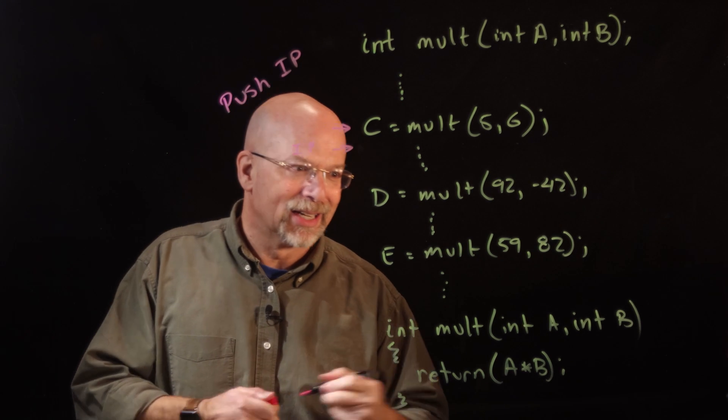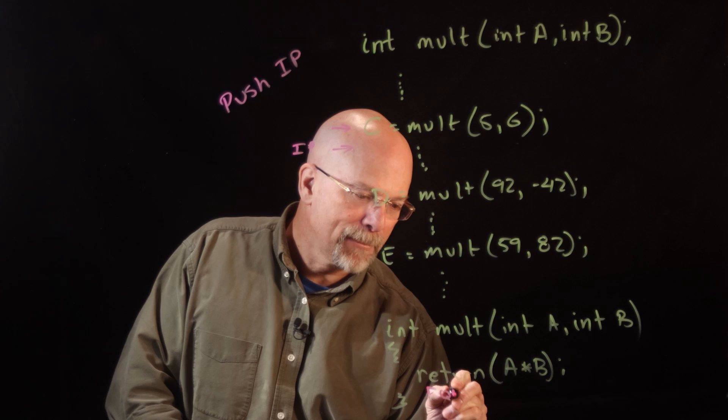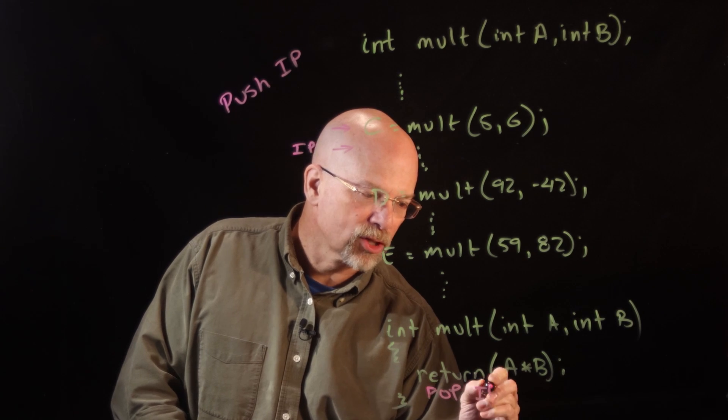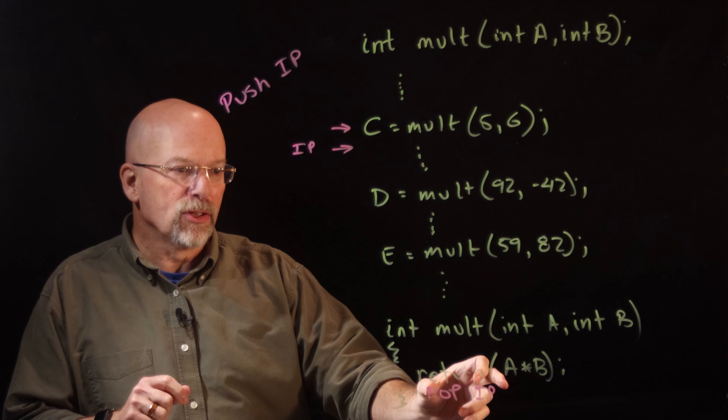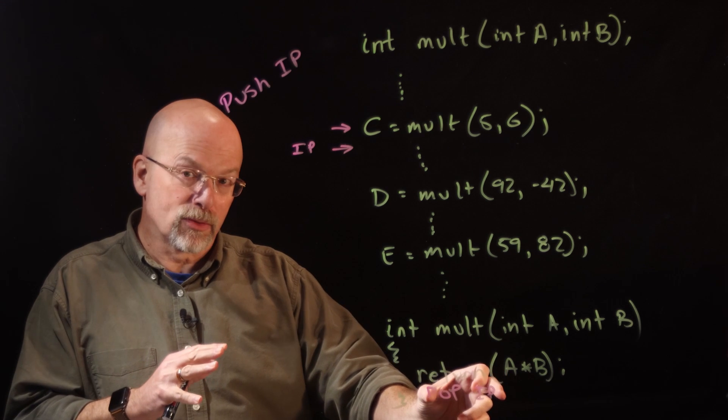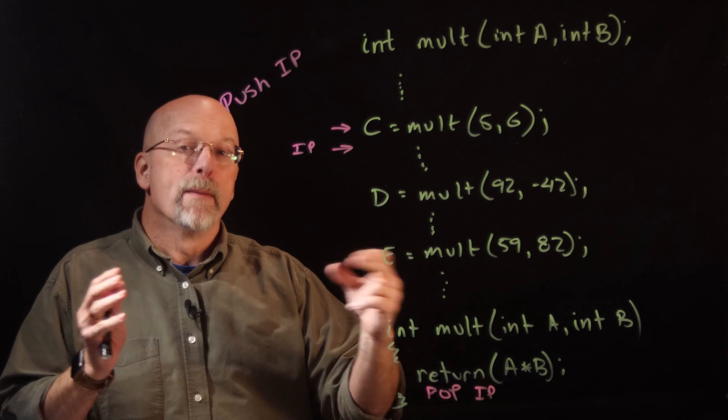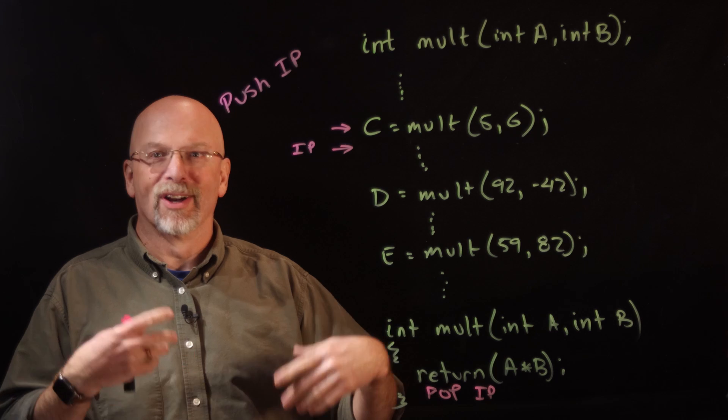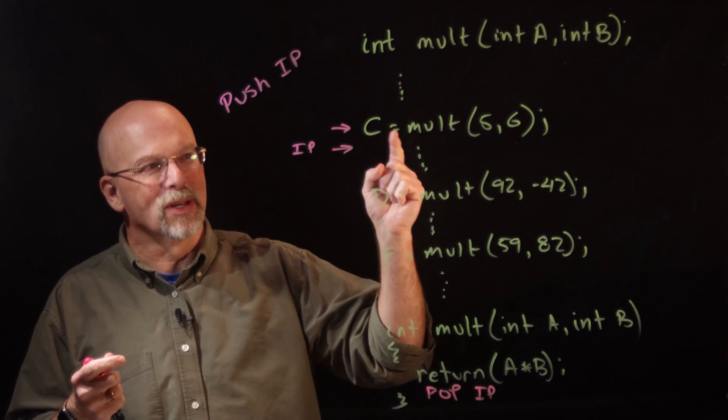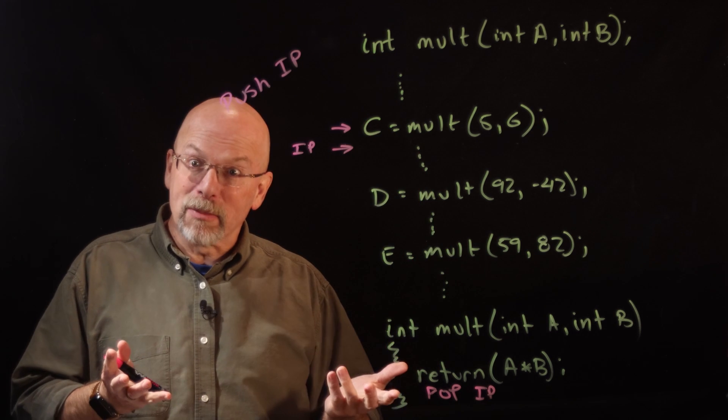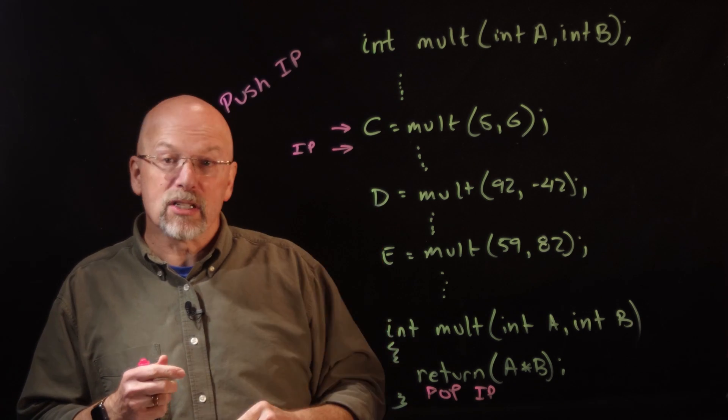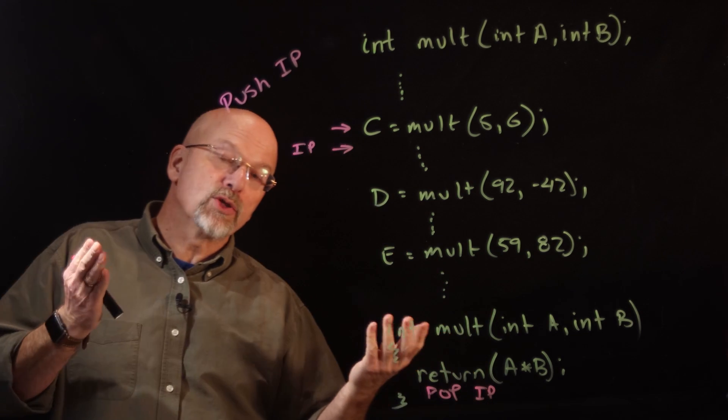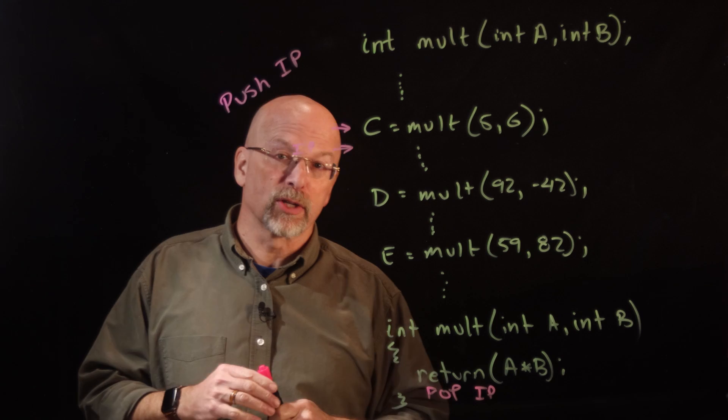So right here, all I've got to do is pop the instruction pointer, and it'll grab off the stack that value that was the return address, puts that in the instruction pointer, and the next instruction we execute is that one right there and it comes back exactly where we wanted it to. If you do the same thing for each of these function calls, then you'll always return to exactly where you're supposed to be.